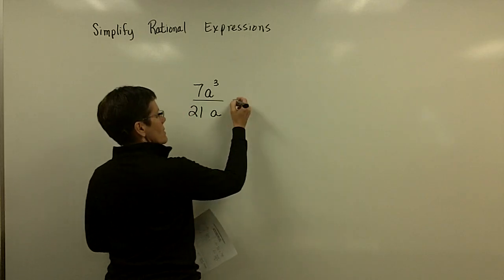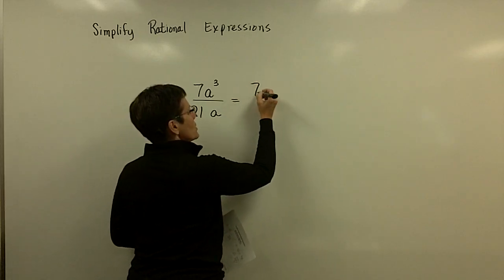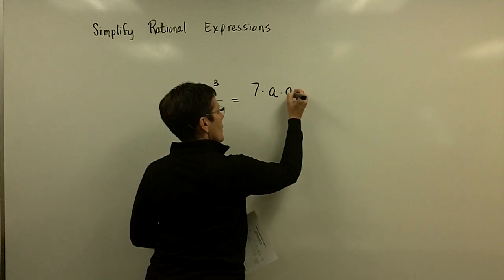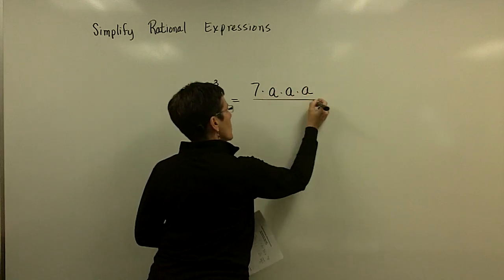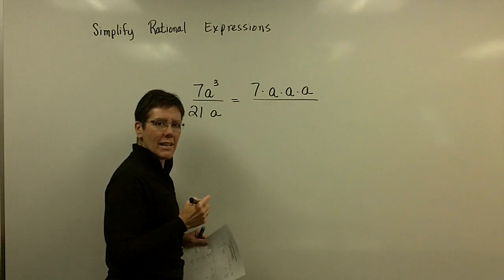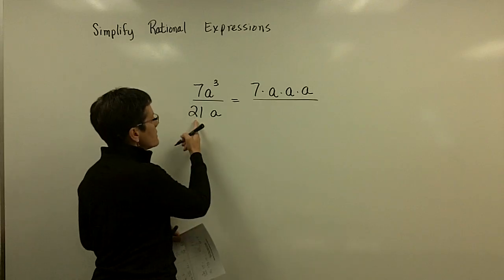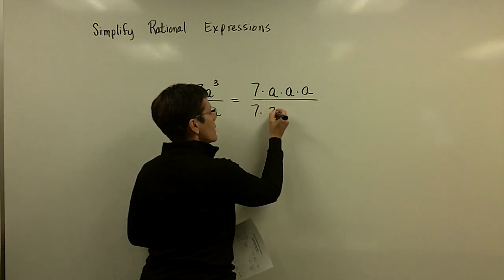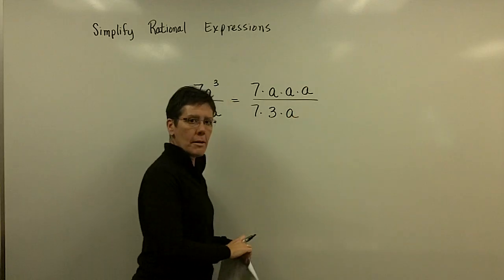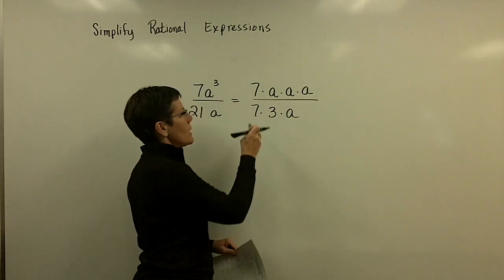So again, not really necessary to write all this work out, but I just want you to see this. We already know that when we divide, we subtract our exponents. But take a look at that in its factored form. And take a look at this as 7 times 3 times a. And so what I'm doing is I'm removing the number 1.